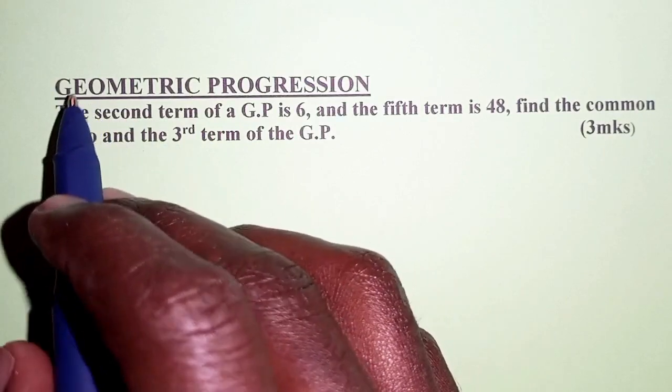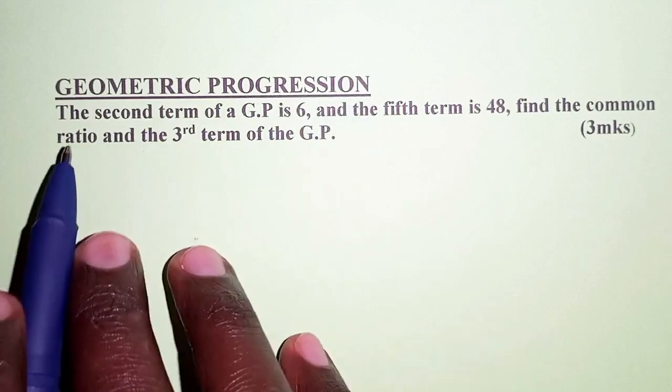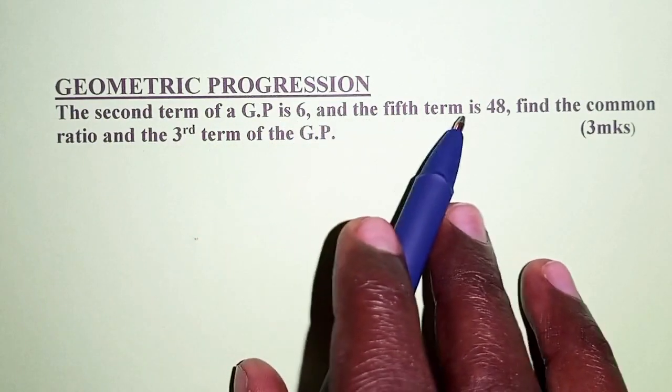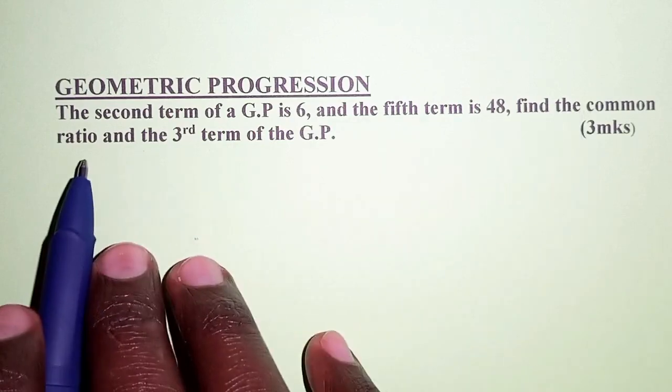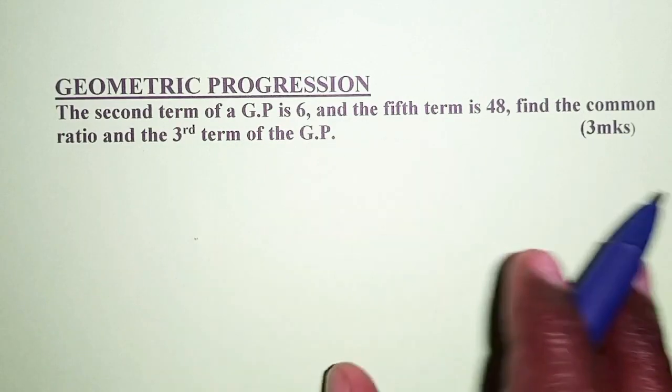Hello everyone, welcome back to our channel. The question today is about geometric progressions. The second term of a GP is 6 and the fifth term is 48. Find the common ratio and the third term of the GP.